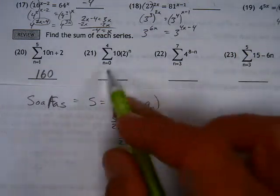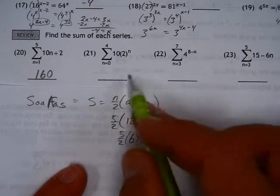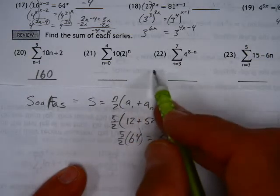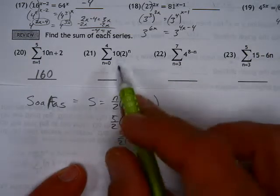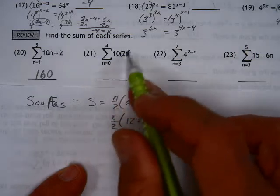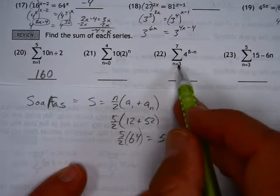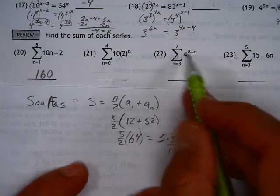In both of these cases, you have a common ratio. There's another equation, but I think with this one it's just easier to plug it in. Plug in 0, 1, 2, 3, and 4, and in this case, plug in 3, 4, 5, 6, and 7.